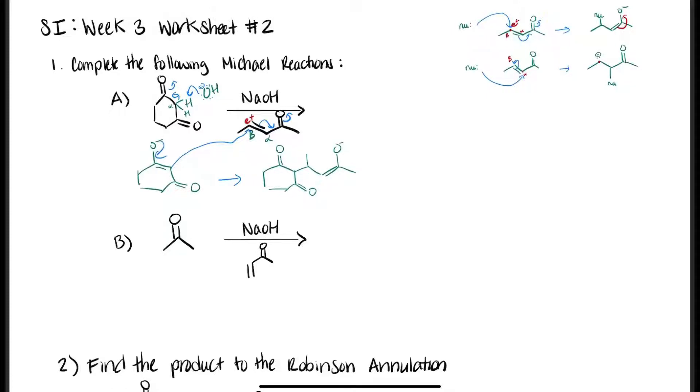It will be easier to see if you label the carbon numbers. Don't forget the methyl group on carbon number three. And then we can get rid of the pi bonds.